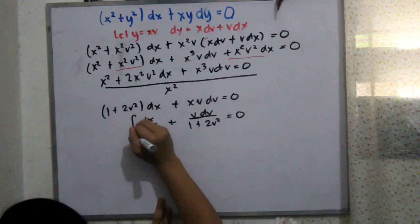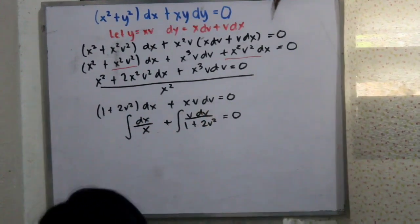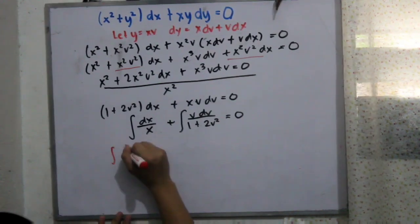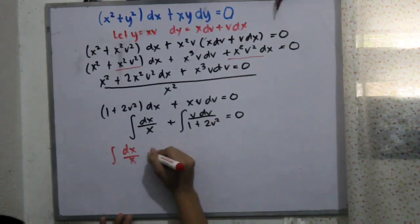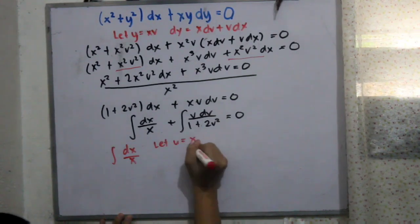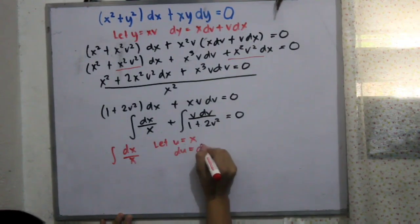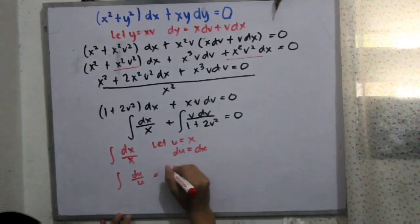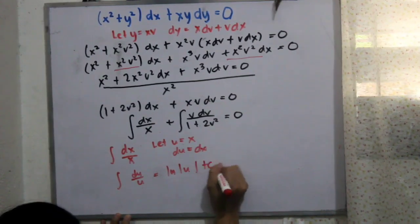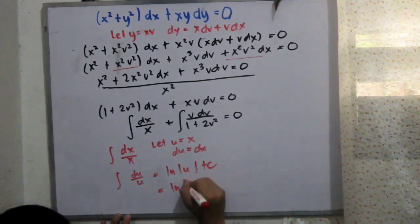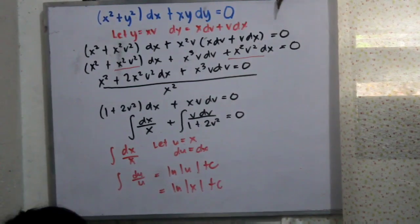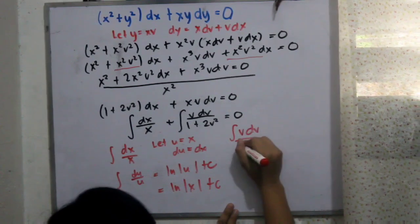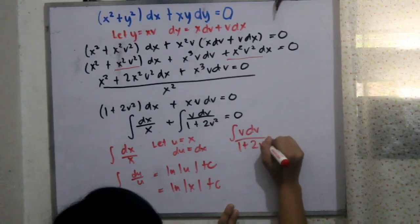Next we integrate both terms. Starting with dx over x: let u equals x, so du equals dx. Substituting, we get the integral of du over u, which gives ln u plus c. Substituting back u equals x, the result is ln x plus c. The next term to integrate is v dv over 1 plus 2v squared.